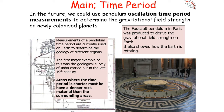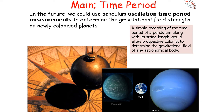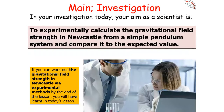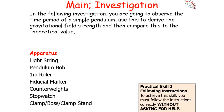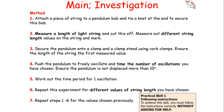Areas with a shorter time period must have denser rock material than surrounding areas. A simple recording of a pendulum's time period and string length would allow colonists on a new alien world to determine the gravitational field of any astronomical body. We can actually calculate the gravitational field strength anywhere — for example, Newcastle — from a simple pendulum system and compare it to its expected value. To carry out this investigation you need: a light string, a pendulum bob, a one-metre ruler, a fiducial marker, counterweights, a stopwatch, clamp, boss and clamp stand.